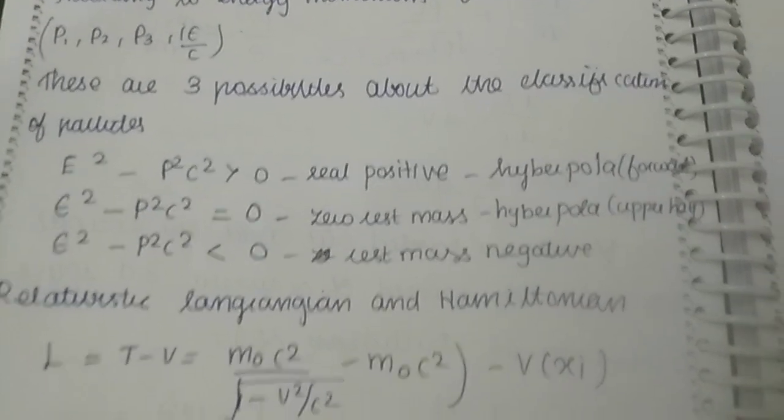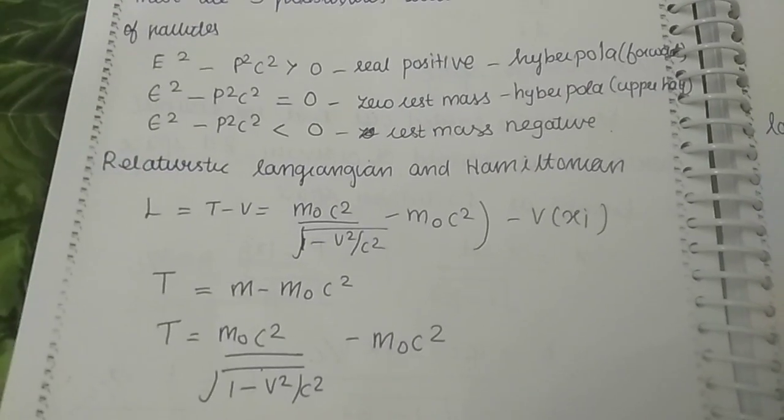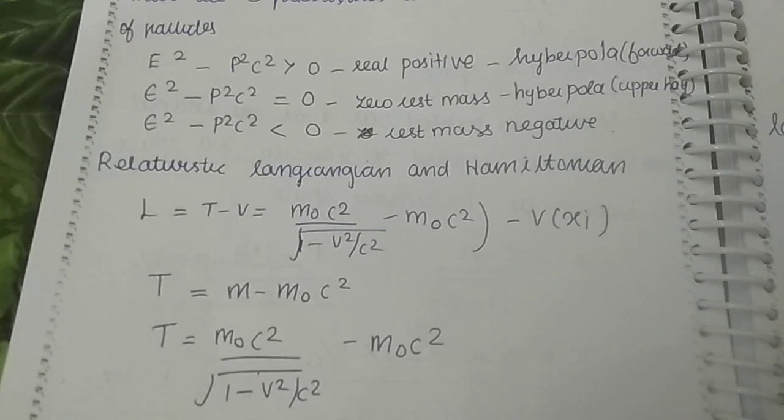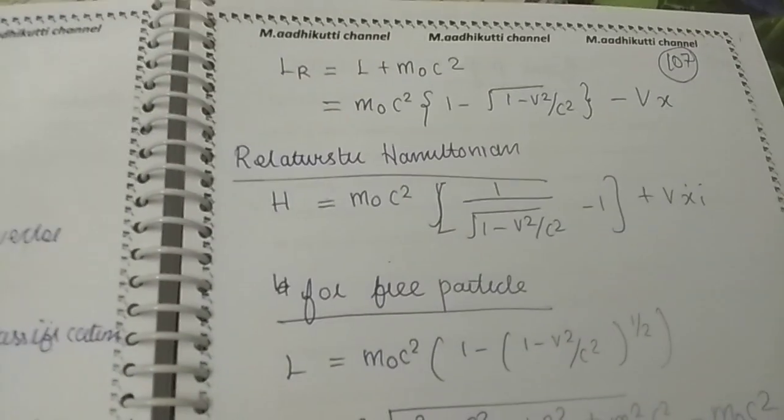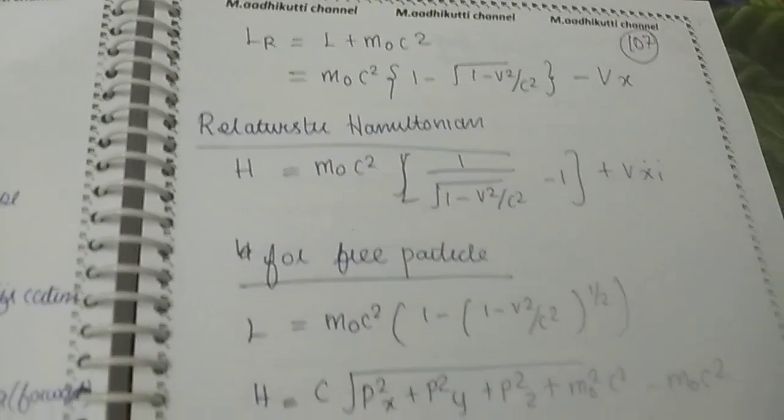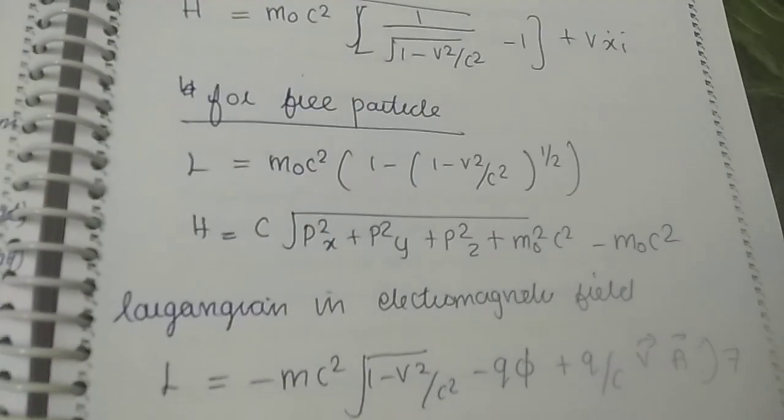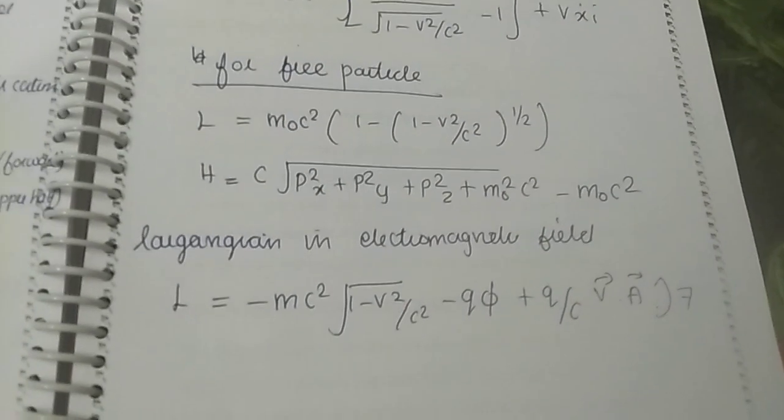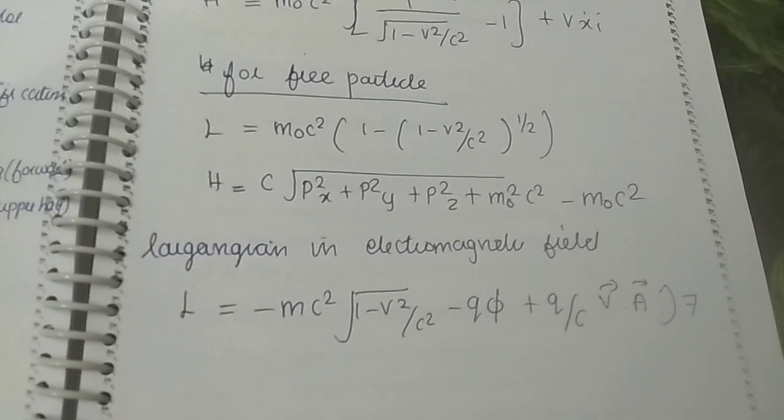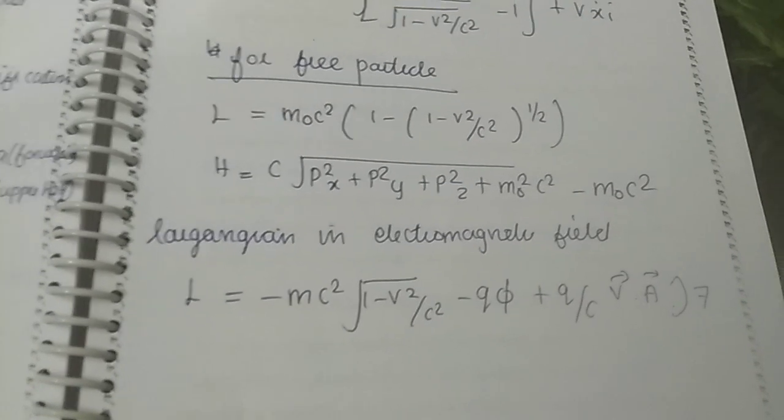Moon possibilities in relativity, Lagrangian and Hamiltonian formulations, relativistic Hamiltonian for free particles, Lagrangian in an electromagnetic field - these equations are important.